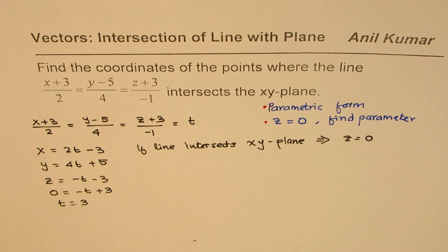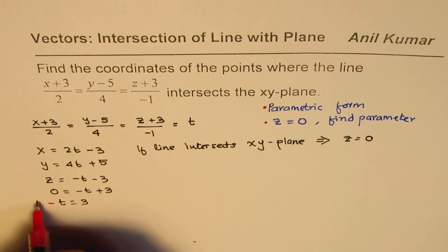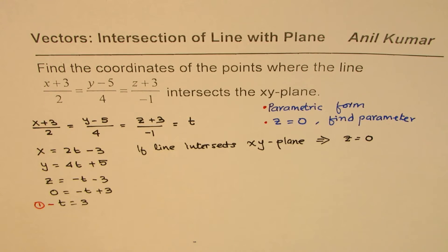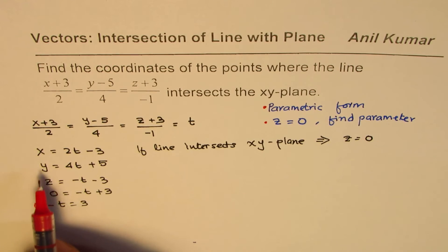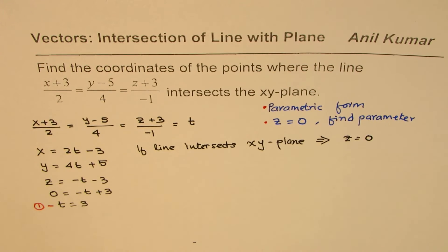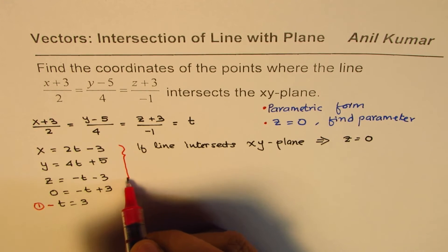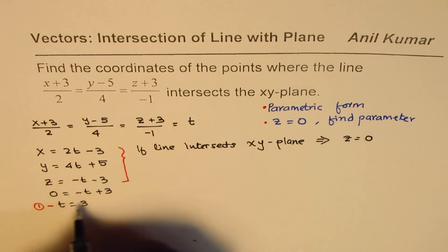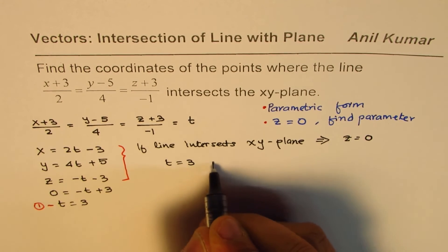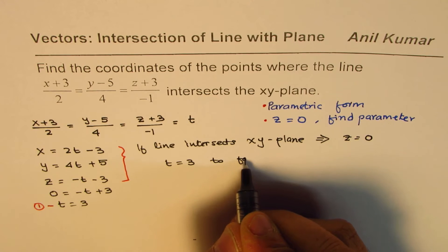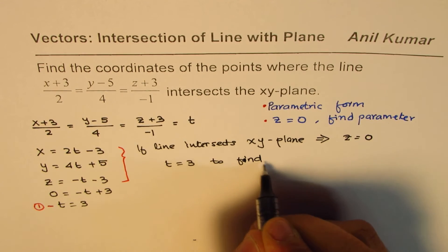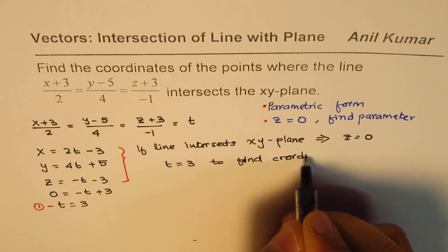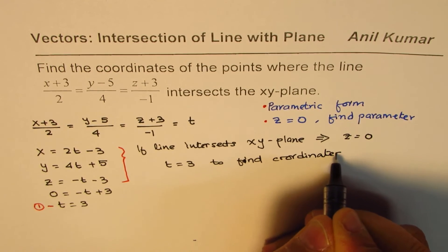So that gives us the value of t. So we'll call this as our equation 1. So we know what t is. Once we know what t is, we can find x and y coordinates. So we'll substitute. So that's our parametric equation. So in this equation, we'll substitute t equals to 3 to find coordinates.